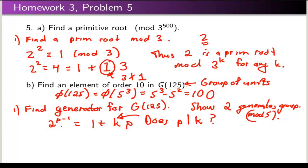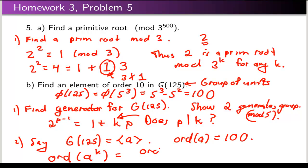That's step 1. Once you have a generator, let's say G_125 is generated by a. So the order of a is 100. How do I get an element of order 10? We have another theorem that says the order of a to some power k is the order of a divided by the gcd of k and the order of a. So use that theorem to come up with an appropriate power of a such that the order is 10. Set that equal to 10. That should take care of that one.